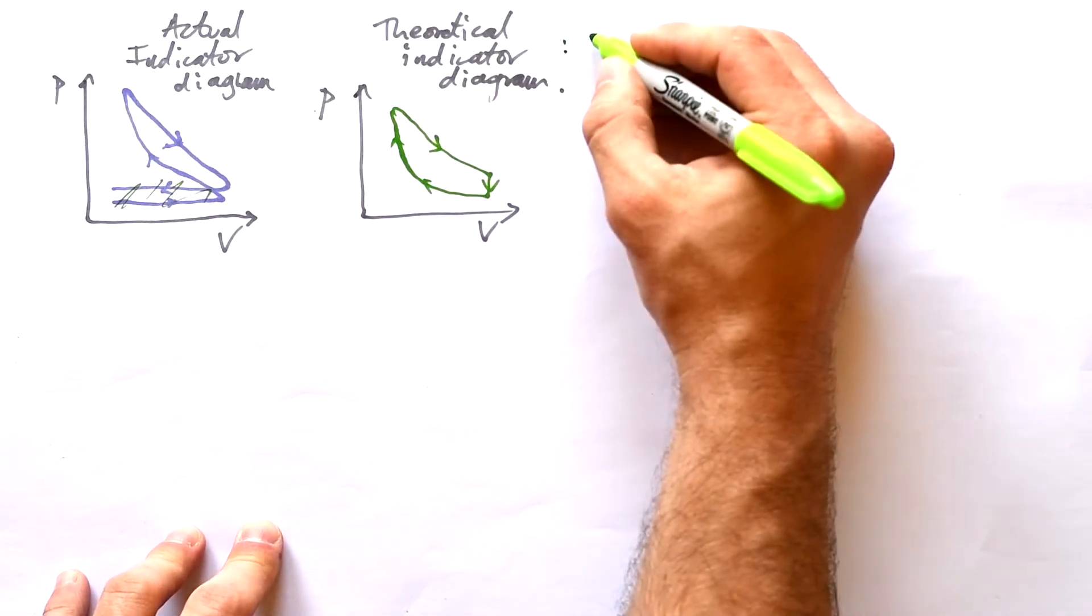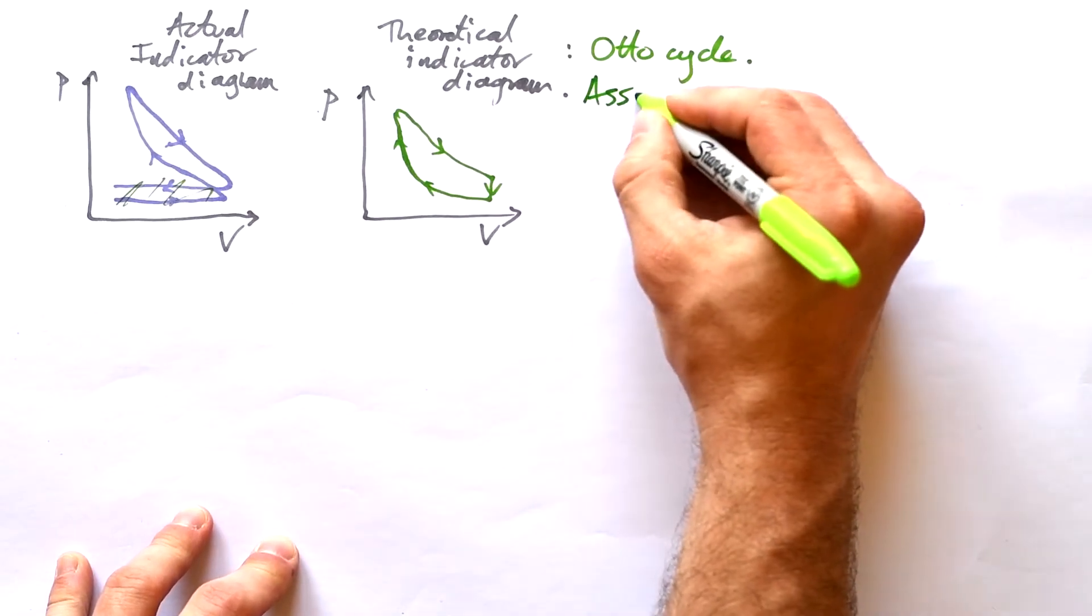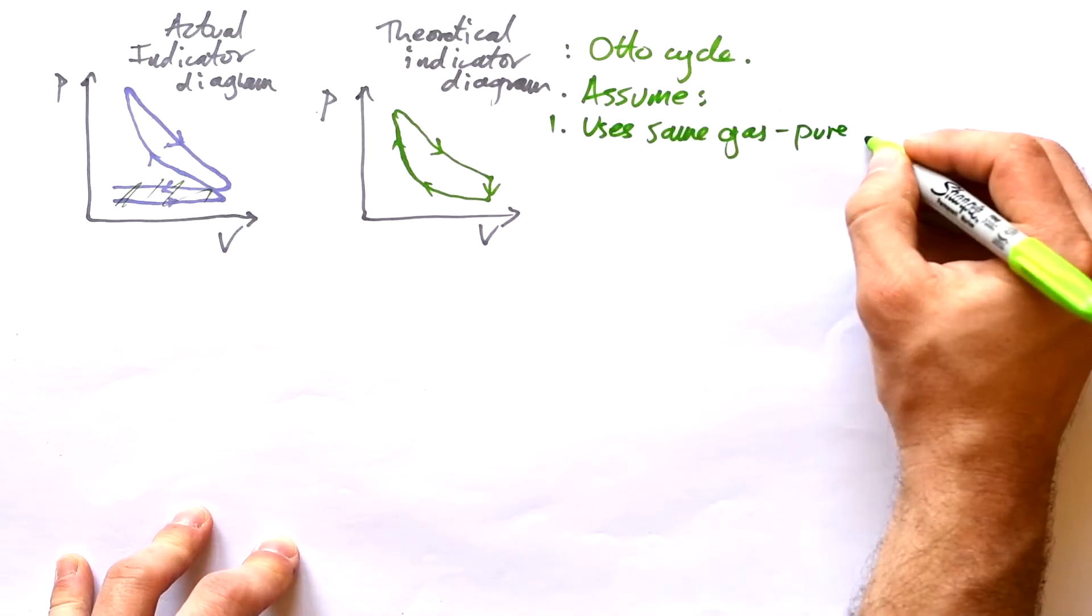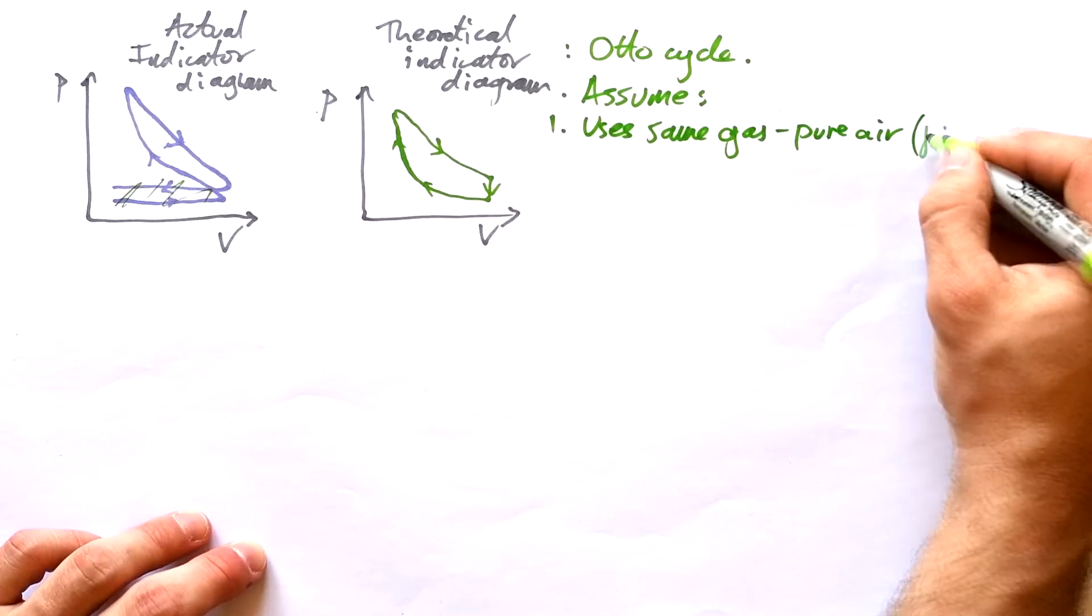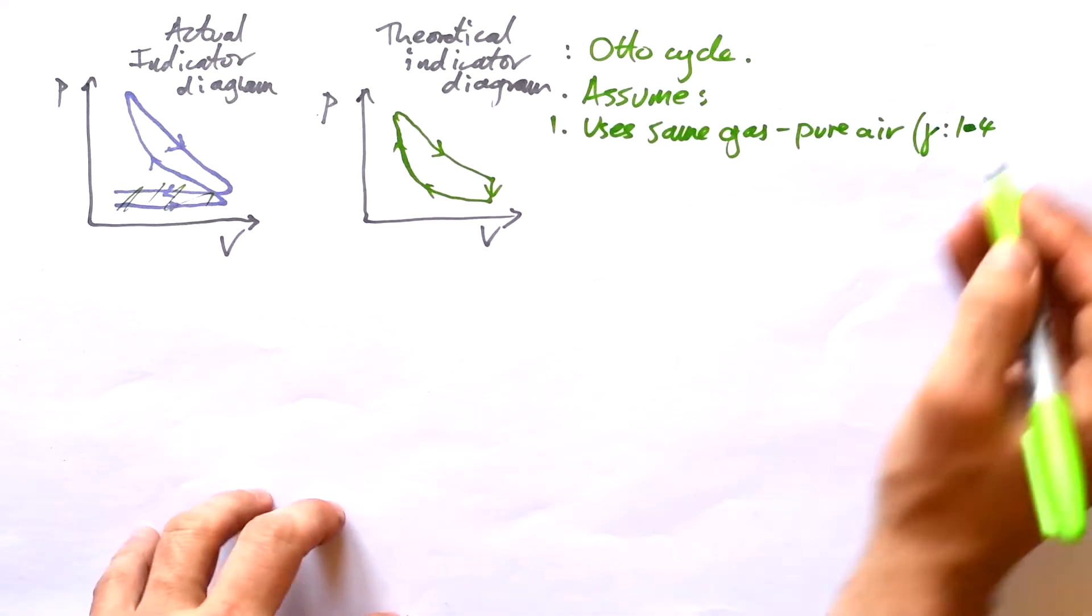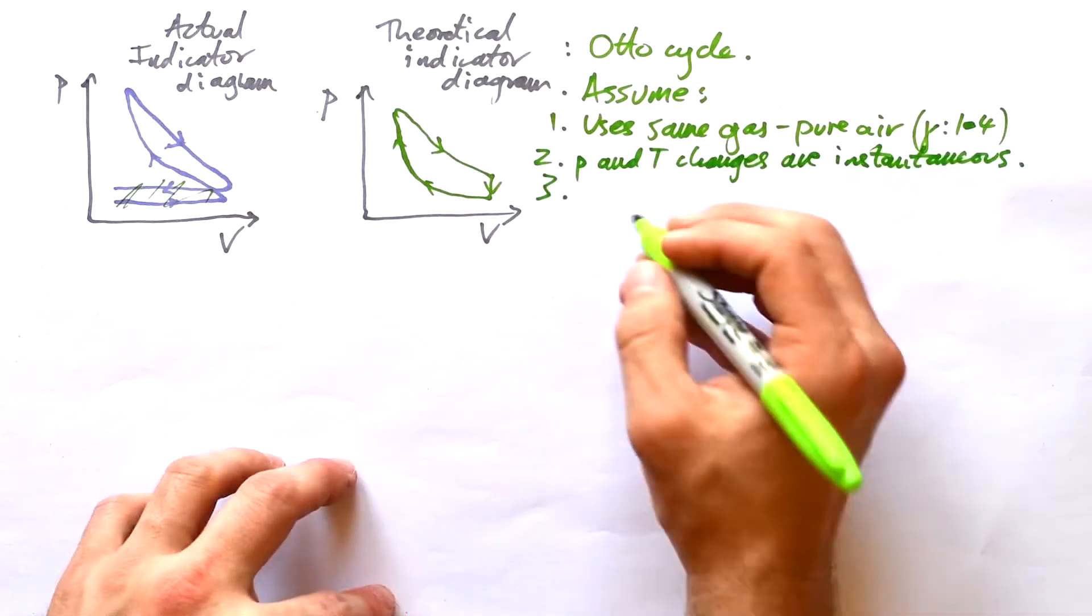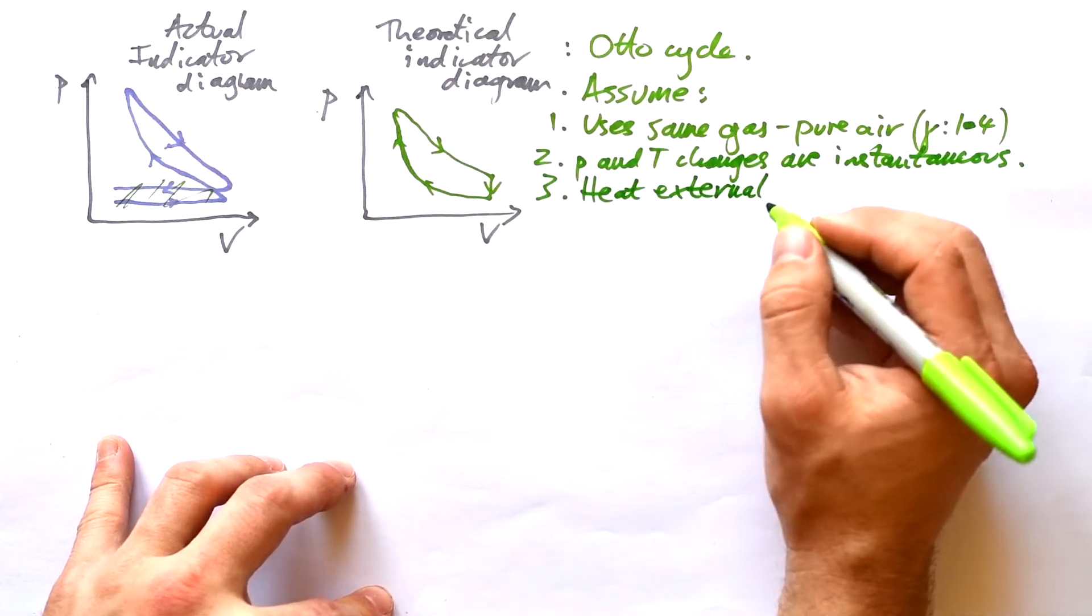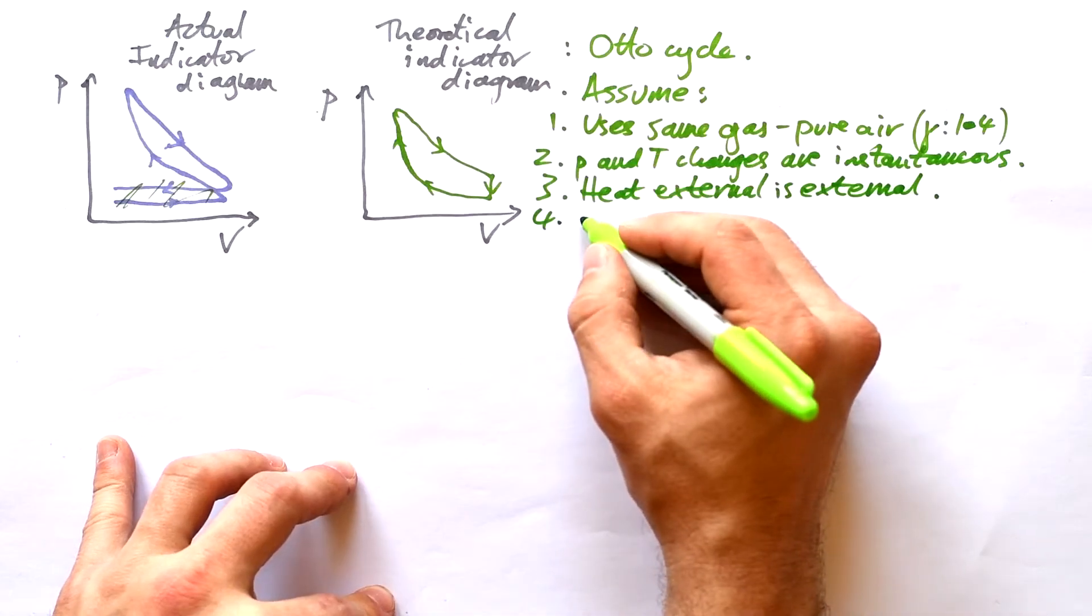Now this theoretical diagram is called the Otto cycle, and this can only be true if we assume a few things. That is that the engine uses the same gas and that's pure air with gamma equal to 1.4. Two, changes in pressure and temperature are instantaneous. Three, the heat source is external. We know that's not true because the heat source is the gas that goes in, it's inside the engine. And four, that it's perfectly efficient mechanically and so there's no friction.